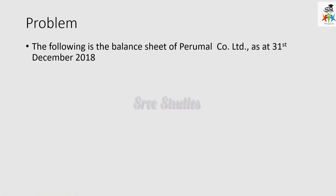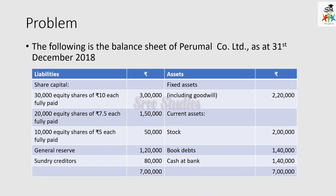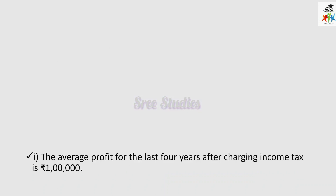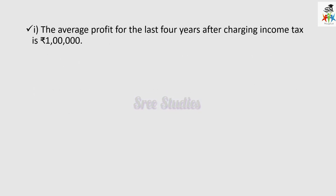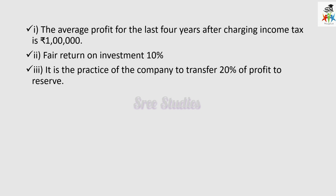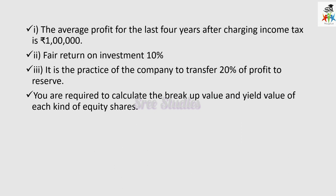This is about a balance sheet of Pirmal Company Limited as at 31st December. You can see the balance sheet, particularly share capital — there are different denominations of equity shares, but all are fully paid up. We can see fixed assets including goodwill, current assets, stock, debts, cash at bank. The average profit for the last 4 years after charging income taxes is 1 lakh, and fair return on investment is 10%. The company transfers 20% of the profit to reserve. You are required to calculate the breakup value and yield value of each kind of equity share.